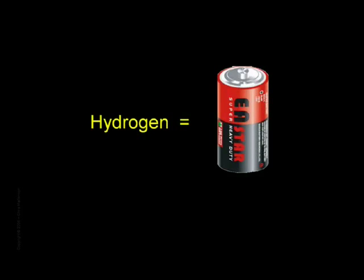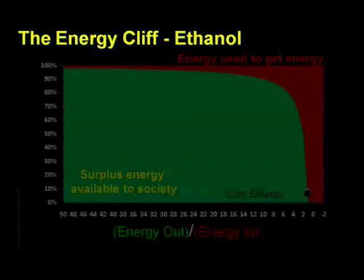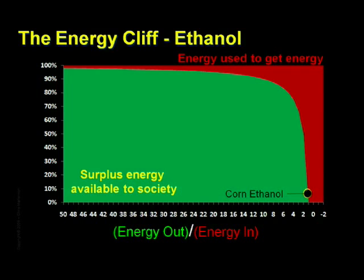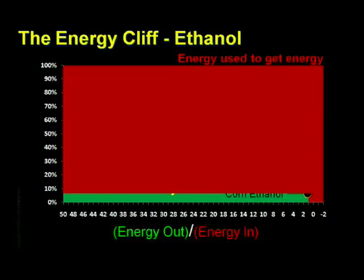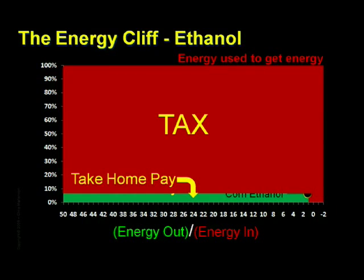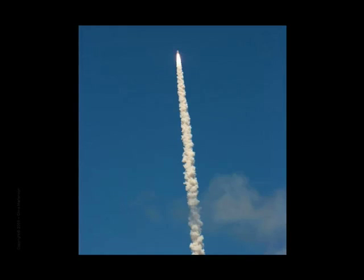Now, to make an absurd argument — because nobody would be this foolish — suppose Congress made the decision to try and run our society on corn-based ethanol. What could we expect? Well, if we adjust our graph to reflect that decision, we'll see a whole lot of red and very little green. The tax is very high, while our take-home pay is very low. By way of commentary, I find it somewhat telling that out of all the possible alternative energy sources, this is the one that Congress chose to advance. I mean, short of directly launching barrels of oil into outer space, it's hard to imagine a much more foolish idea.